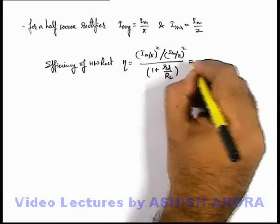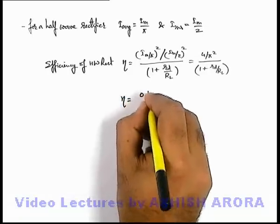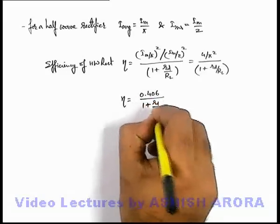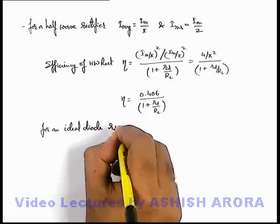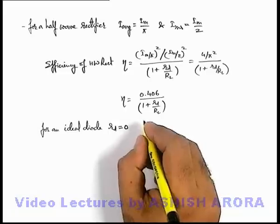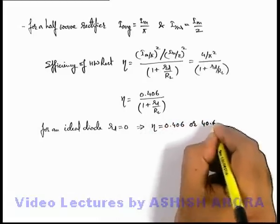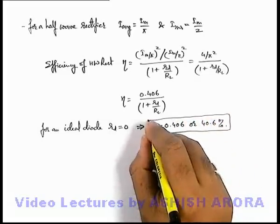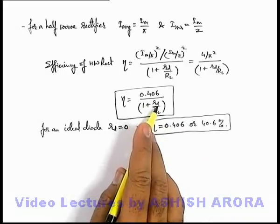On calculation this gives us 4 by pi squared divided by (1 + R_d / R_L). On substituting the value of pi, the efficiency for a half wave rectifier equals 0.406 / (1 + R_d / R_L). For an ideal diode, we can take R_d equal to zero, so the value of eta will be 0.406, or it can be written as 40.6 percent. That is the efficiency of the half wave rectifier if an ideal diode is used; otherwise we substitute the operating dynamic resistance of the diode.